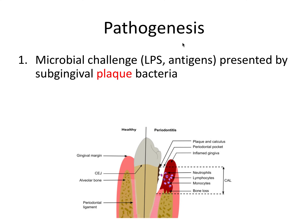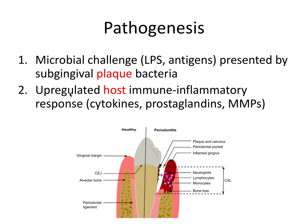Let's talk a little bit about pathogenesis. Periodontal disease is all about an interplay between bacteria and the host. Step one is microbial challenge, presented by subgingival plaque bacteria — notice how plaque is the initiating factor. Plaque bacteria challenge the host by presenting things like lipopolysaccharide, antigens, and other byproducts. As a response, we have an up-regulated host immune inflammatory response — the host responds to this microbial challenge by sending disease-fighting white blood cells to the site of infection, which causes inflammation, redness, and swelling.